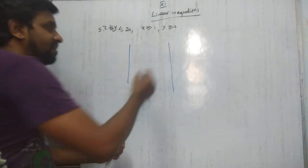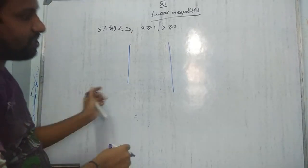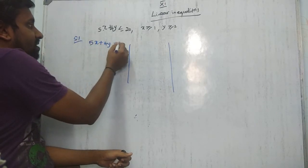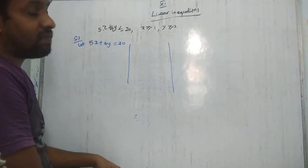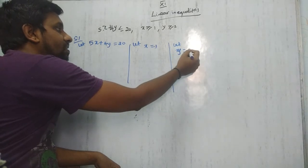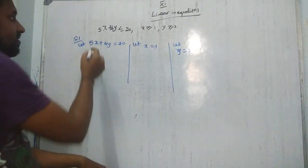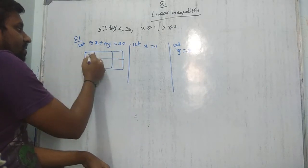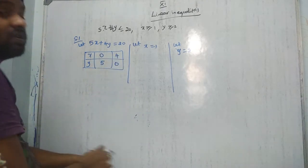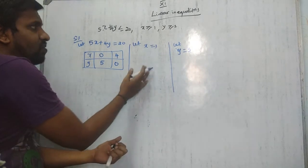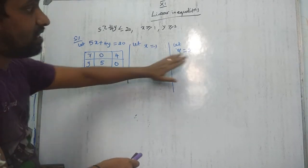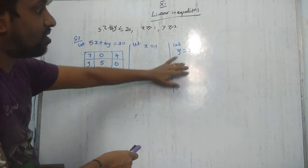Step 1: If there are three equations, divide into three columns; if two equations, two columns. For 5x + 4y = 20, make a tabular column: when x = 0, y = 5; when y = 0, x = 4. For x = 1 and y = 2, there is no need to find a tabular column since those values are already given. Step 2: Check at the origin (0, 0) for all inequalities.